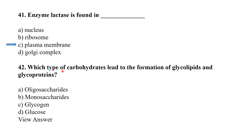Enzyme lactase is found in the plasma membrane. Which type of carbohydrates leads to the formation of glycolipids and glycoproteins? Oligosaccharides are mainly found in the formation of glycolipids and glycoproteins.